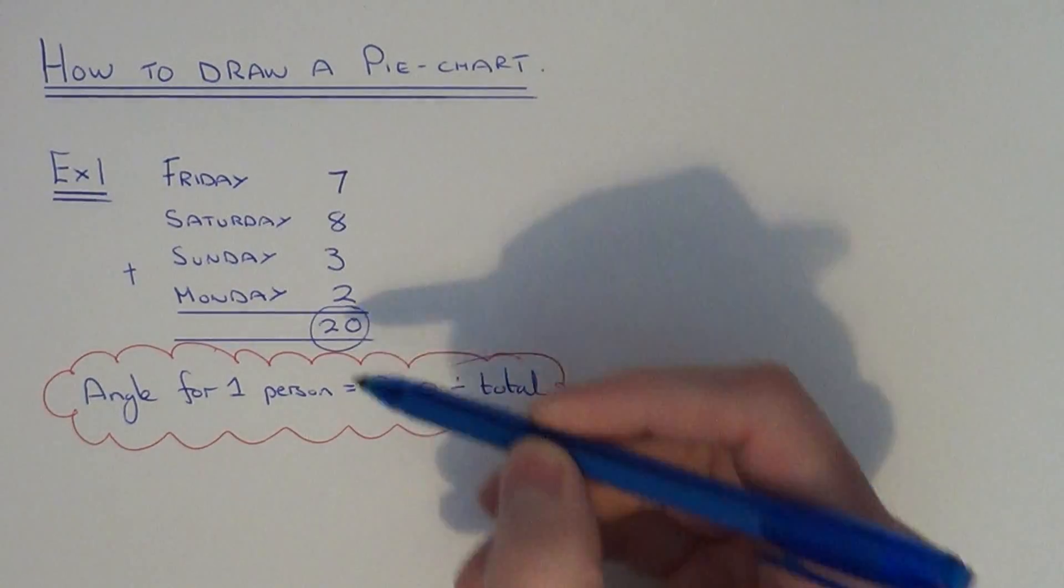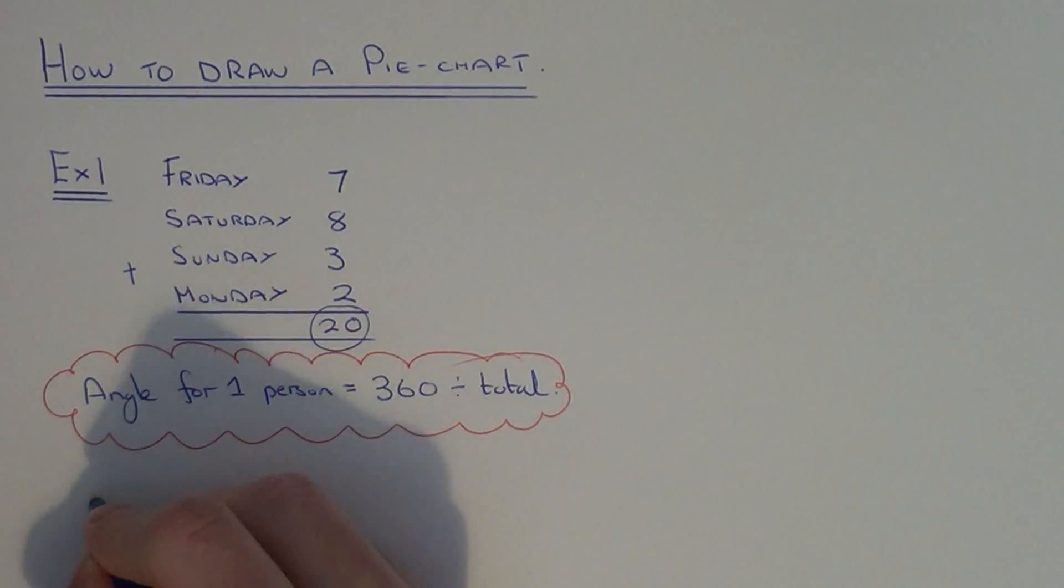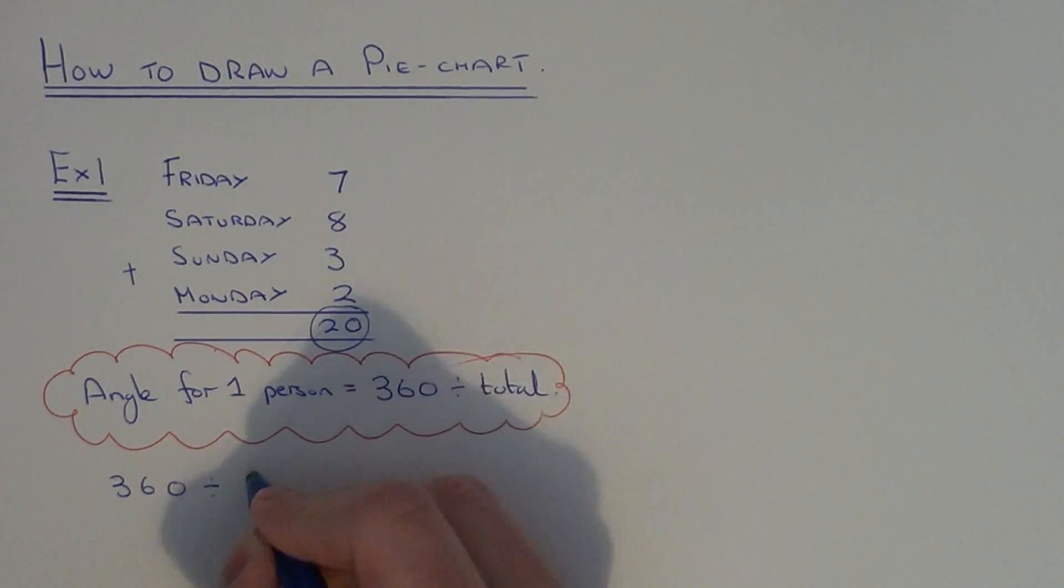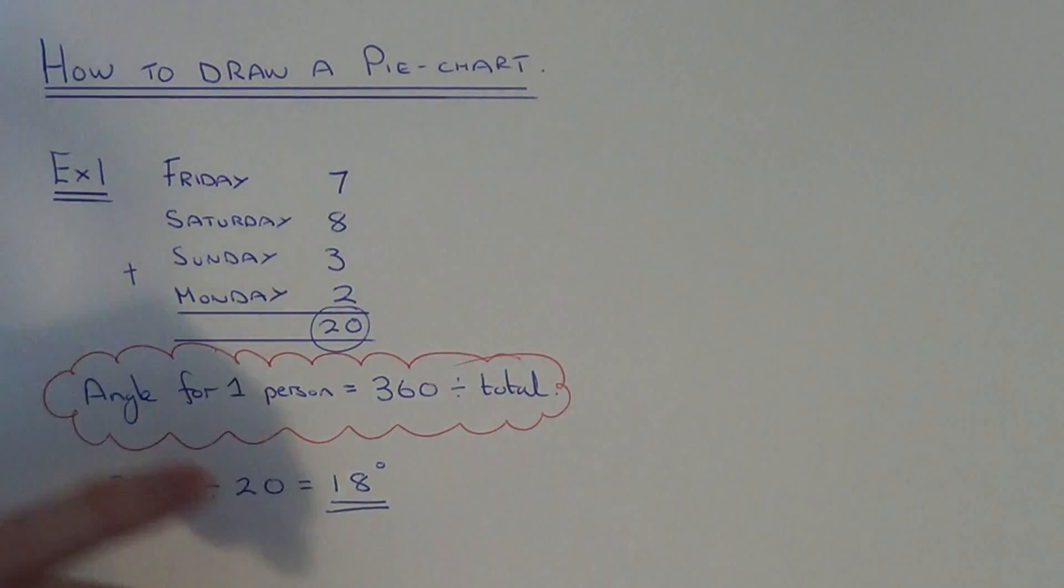So you add up the amount of people in the survey and divide it into 360. So in this example our angle for one person will be 360 divided by 20, and this comes out as 18 degrees. So every person in our survey is worth 18 degrees.